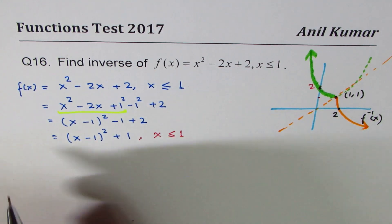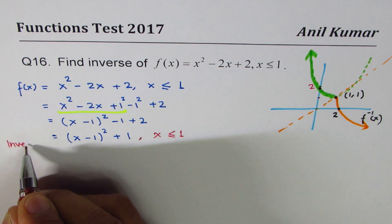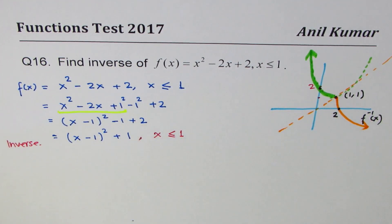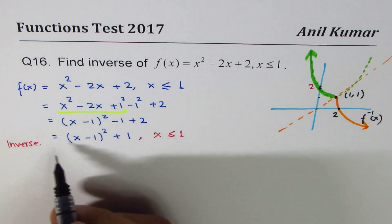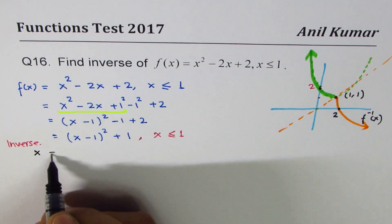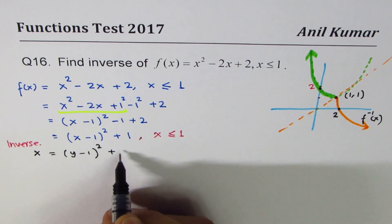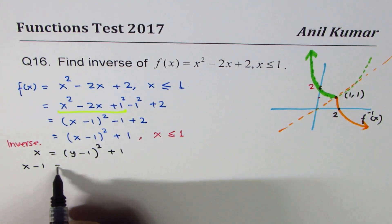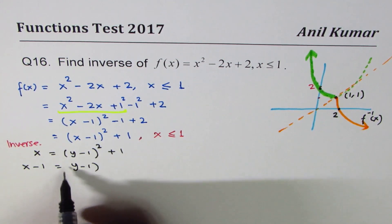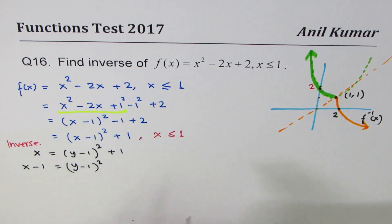Now let's find the inverse. To find the inverse we swap x and y, so we can write x = (y - 1)² + 1. Bringing 1 to the side: x - 1 = (y - 1)².